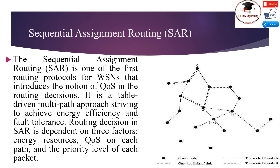Thus, high priority packets take lower delay paths and lower priority packets use paths of greater delay. For example, if node C generates a packet of priority 3, it follows the longer path along tree B; a packet of priority 5 (high priority) follows the shorter path along tree A. SAR minimizes the average weighted QoS metric over the lifetime of the network. The sink periodically triggers a metric update to reflect changes in available energy resources after transmissions.